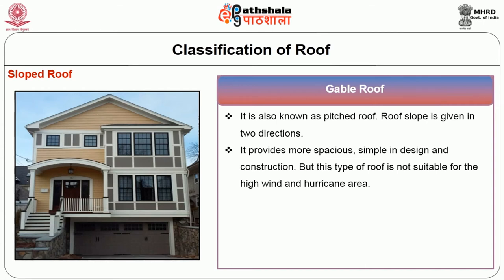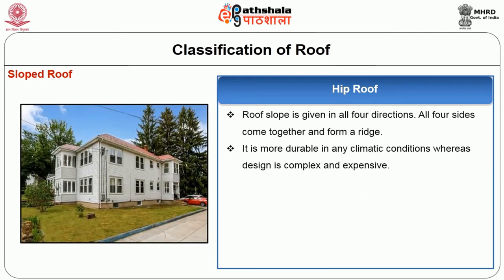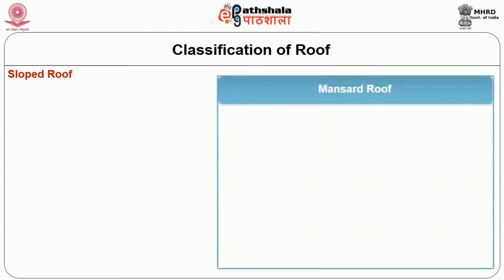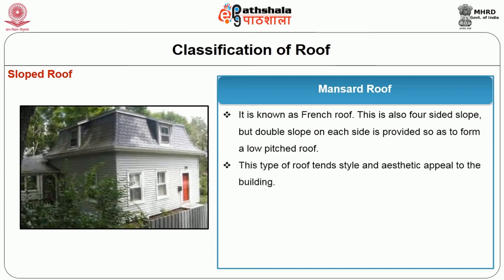A gable roof is not suitable for high wind and hurricane areas. Hip roof: the slope is given in all four directions and all four sides come together to form a ridge. It is more durable in any climatic conditions, but the design is complex and expensive. Mansard roof, also known as a French roof, is a four-sided slope with a double slope on each side to form a low-pitched roof. It adds style and aesthetic appeal to the building.